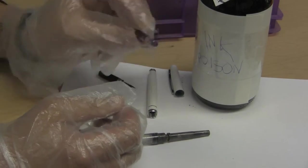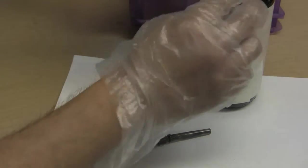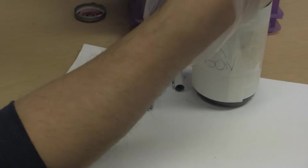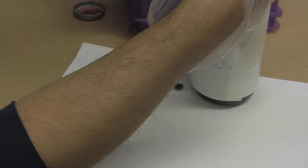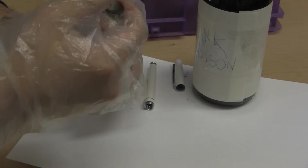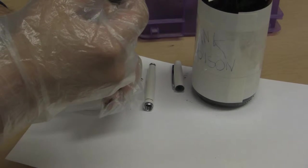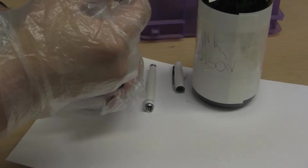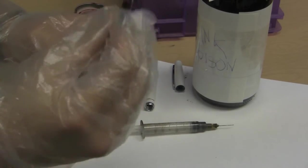You take a used-up fountain pen cartridge, take some printer ink, and instead of buying fountain pen ink, you just use printer ink. And then you've effectively turned your fountain pen into a printer. There you go.